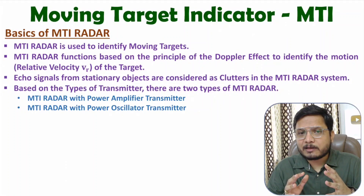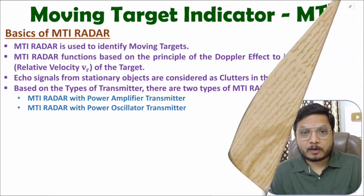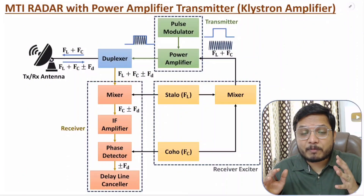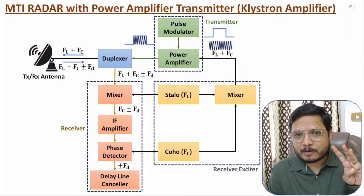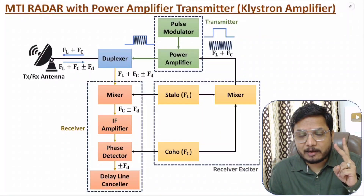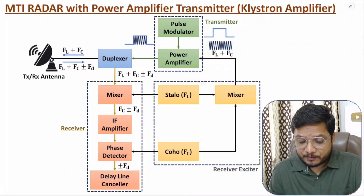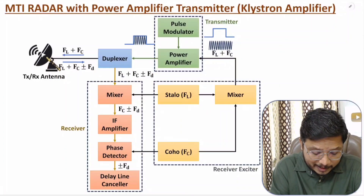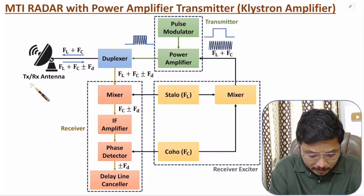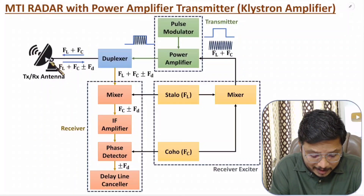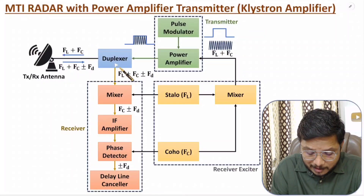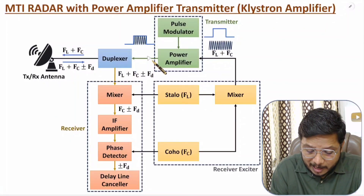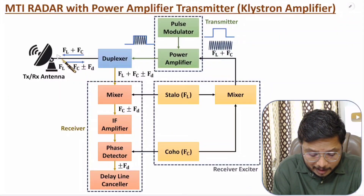MTI radar with power amplifier has three major elements in its block diagram: antenna, transmitter, and receiver. We have a single antenna for both transmission and reception. To isolate the high power transmitter and low power receiver with this single antenna, we use a duplexer.